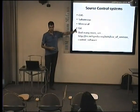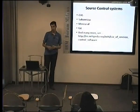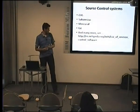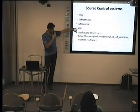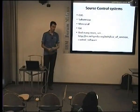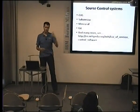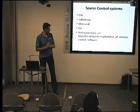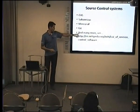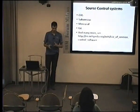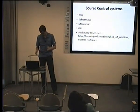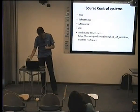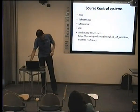Another one is Subversion — at OpenNTF we use it. And the latest are Mercurial and Git. Git also has GitHub, it's on the web and it's very popular. But there are many more source control systems. That's why I use CVS — we use it in our company.